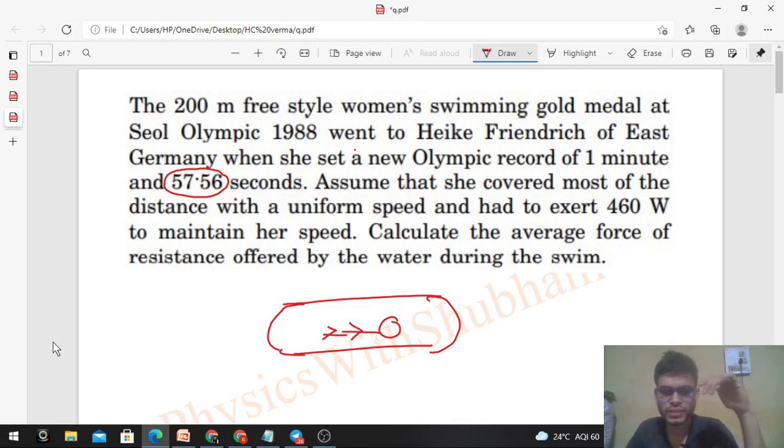with some force F. So there will be a force applied by the water on the person in the forward direction. This is your force, let's say F1. The person while swimming pushes water with F1 force, and this F1 force is applied by the water on the swimmer.